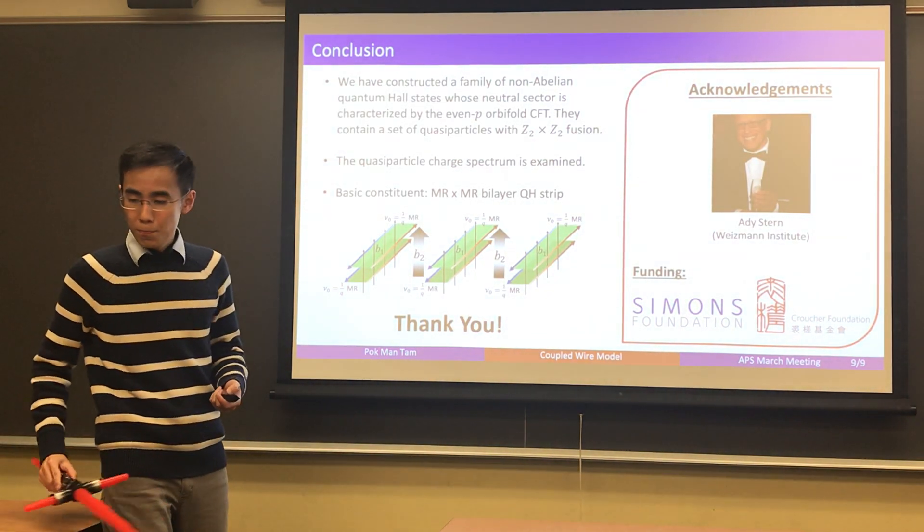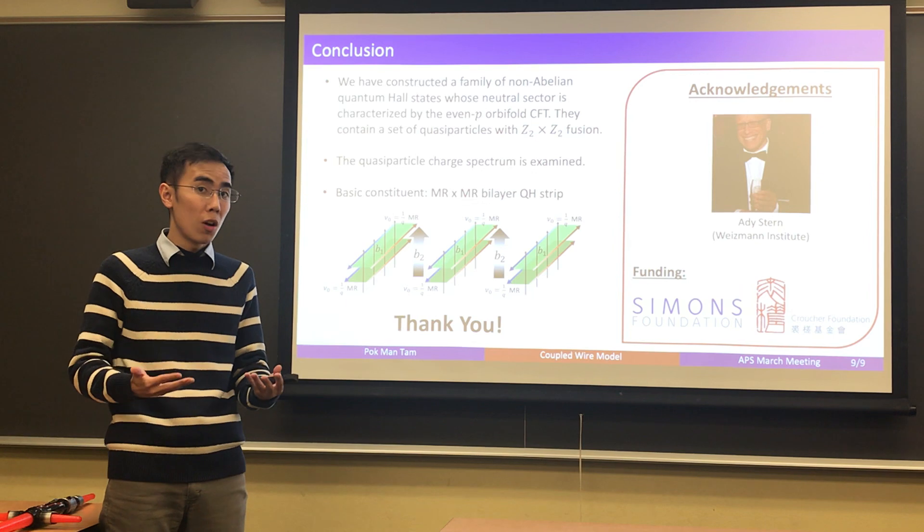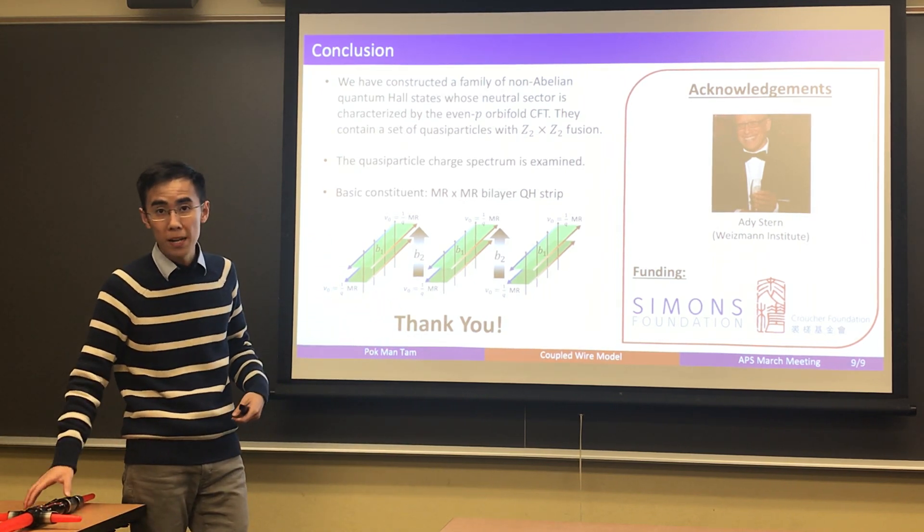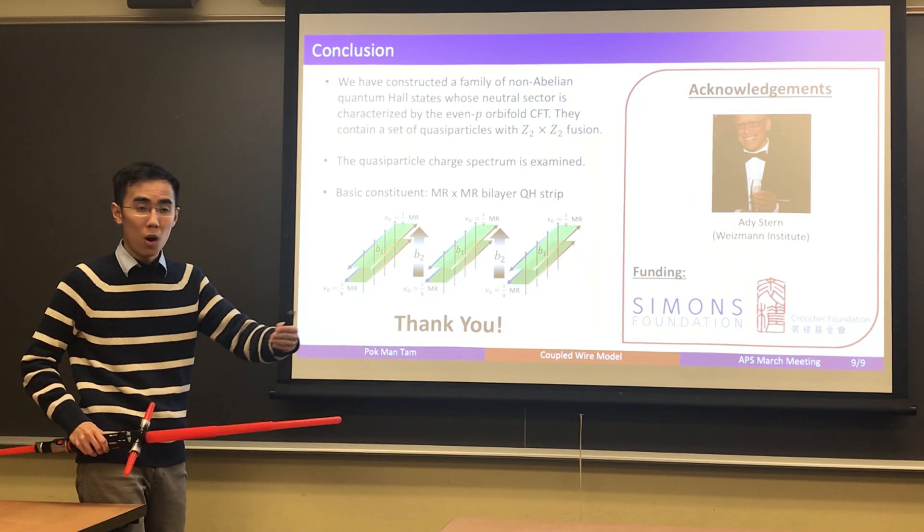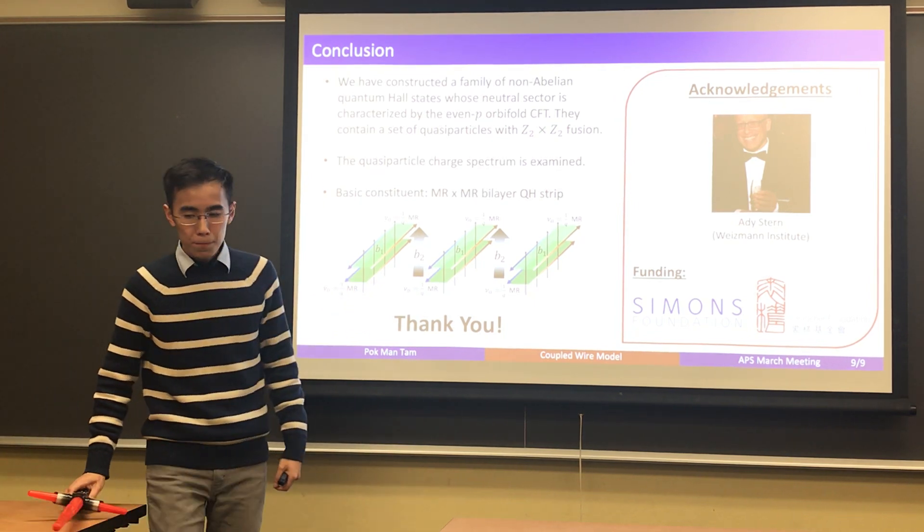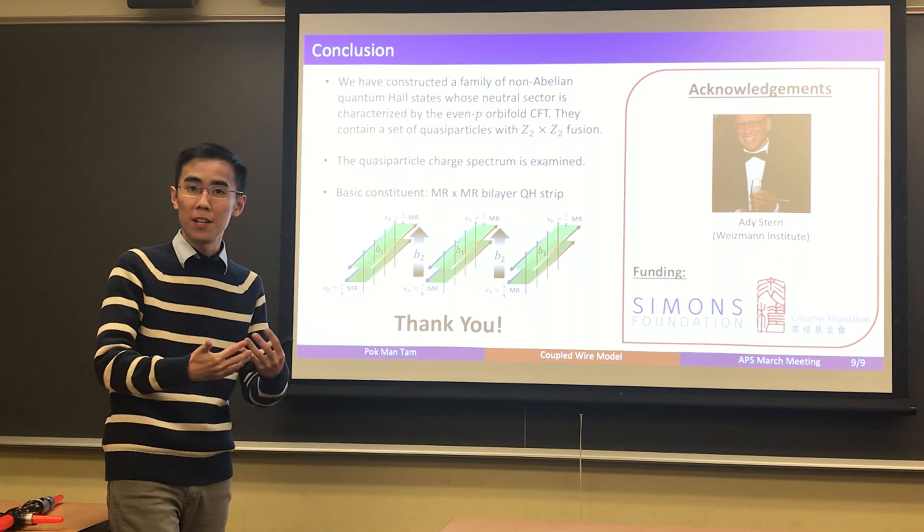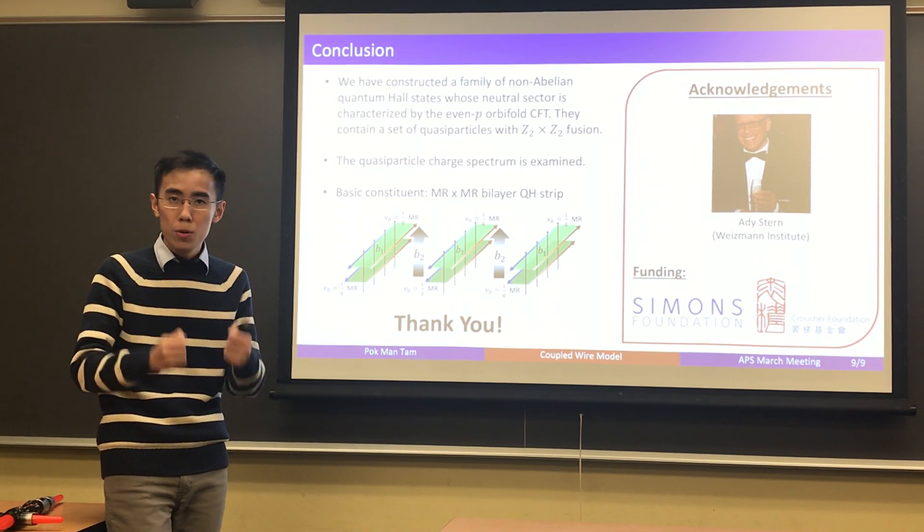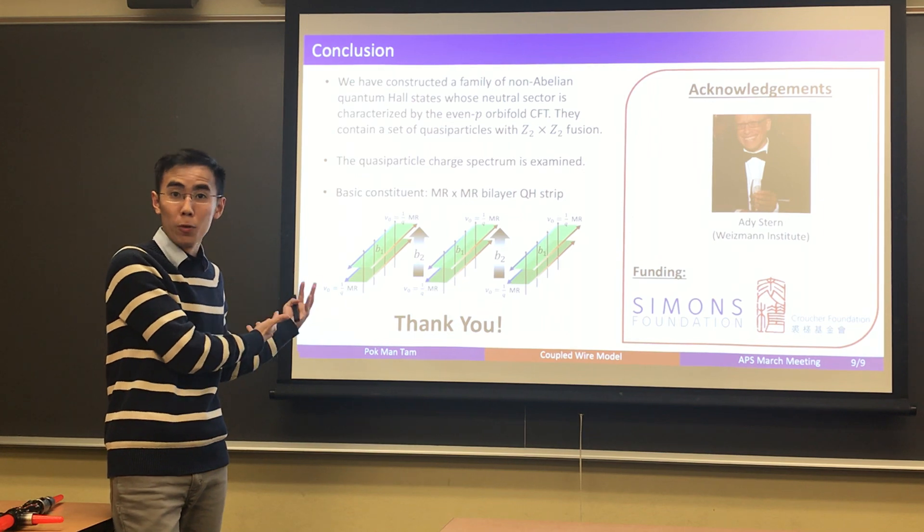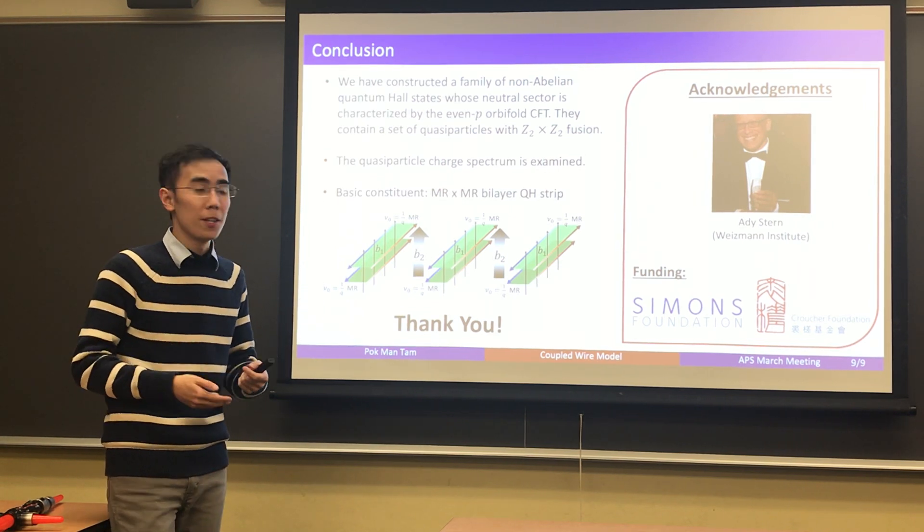Well, with that, I would like to summarize by saying that we have constructed a family of non-abelian quantum Hall, fractional quantum Hall states, that are termed the Z2 cross Z2 orbital quantum Hall states. And we also studied the quasiparticle charge spectrum, which might be experimentally relevant. The basic constituent in our coupled wire model is this, a single wire composed of two layers of Moore-Read quantum Hall states. I think it would be important to also emphasize that we're not proposing some recipe for experimental realization. Instead, we are trying to develop a proof of principle that in electronic systems, in principle, these nice non-abelian orbital fractional quantum Hall states can really arise. We look forward to seeing experimental works in the near future that is related to this subject.